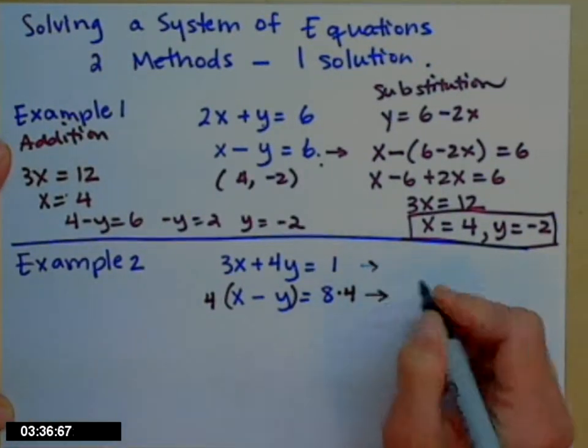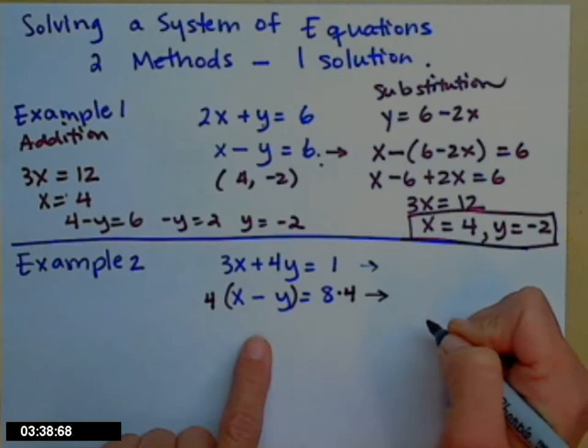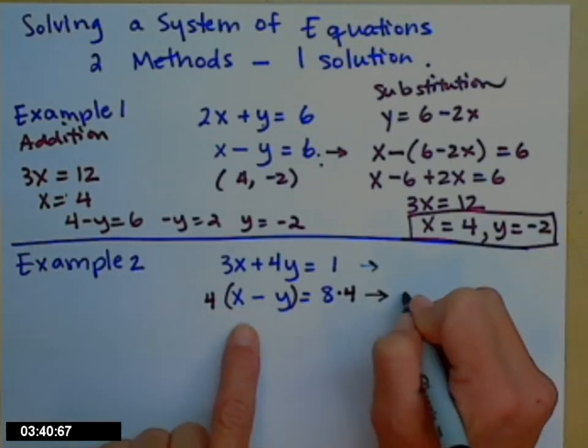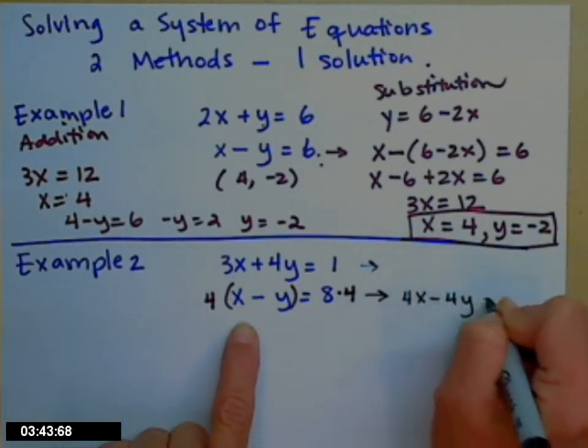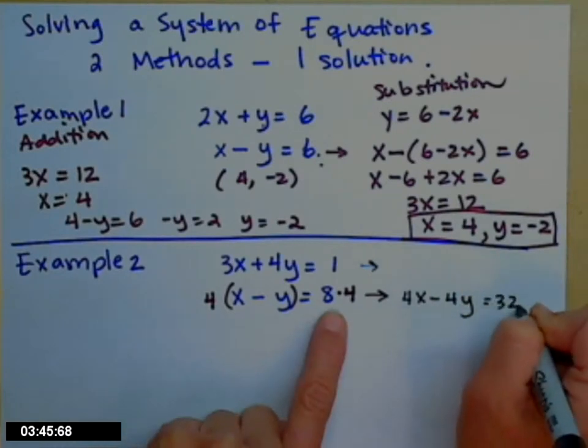So what happens when I do that? On the right-hand side, I'm sorry, left-hand side, that 4 will distribute. 4x minus 4y. On the right-hand side, I get 32.